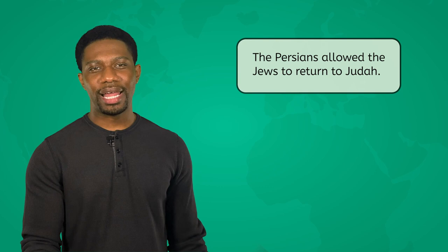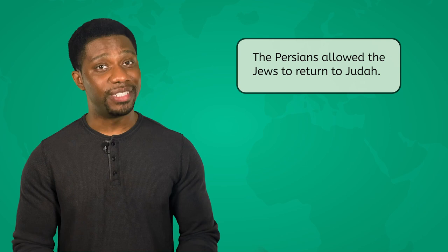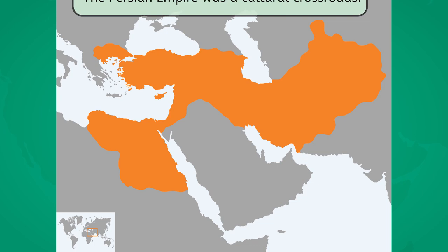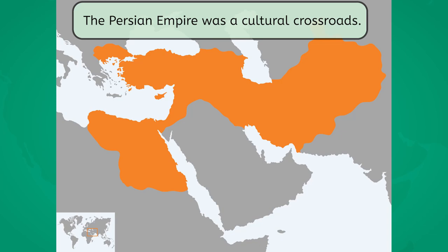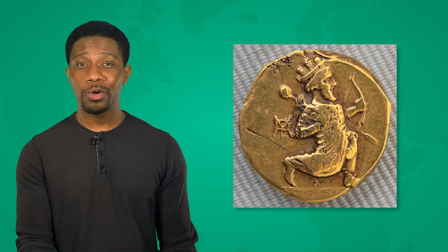Now let's check out how the mighty Persian Empire changed history forever. Remember when they allowed the Jews to return to Judah? That decision set off a ripple effect, like a massive domino chain that's been tipping over for centuries and continues to influence events even today. The Persian Empire's perfect position at the crossroads of three continents made it like a giant cultural handshake between East and West. A lot of that happened on the Royal Road — a 1,500-mile mega highway built by King Darius — like the first interstate, making trade and communication faster and easier. And Persian coins were such a big hit that other cultures like Rome started copying them.